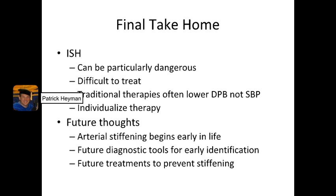Final take-home: isolated systolic hypertension can be particularly dangerous because as you try and treat it, you usually lower the diastolic more than you lower the systolic, putting the patient at risk for ischemia due to the dynamics of blood pressure perfusion. It's difficult to treat — traditional therapies often lower diastolic pressure more than systolic, and you've got to individualize your therapy. Arterial stiffening begins earlier in life; it doesn't suddenly occur at age 60, it's just that's when it shows up clearly. In the future, we'll have diagnostic tools to early identify patients with arterial stiffening, and treatments that can hopefully prevent that stiffening. Thank you very much.